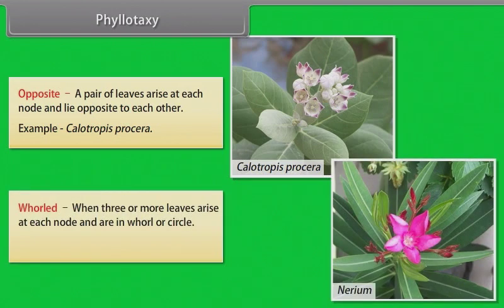Whorl: When three or more leaves arise at each node and are in whorl or circle. Example: Nerium Oleander.